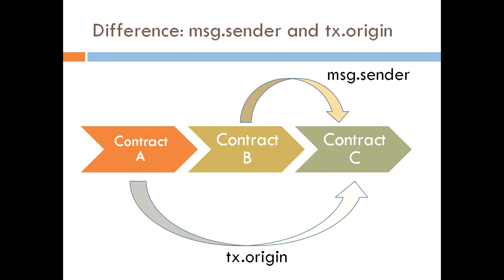Hello everyone, my name is Vikas and this is one more session from Tutorials Diary on the Ethereum blockchain. In this session we'll talk about the difference between message.sender and transaction.origin. We have received many requests and queries on these two functions, and most people think these are two similar functions performing the same thing — so why do we have two separate functions?